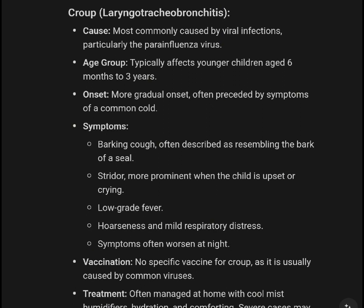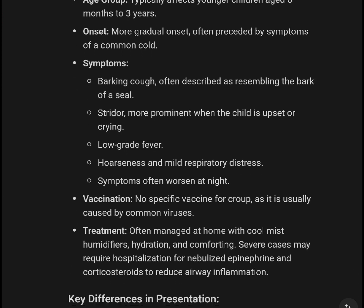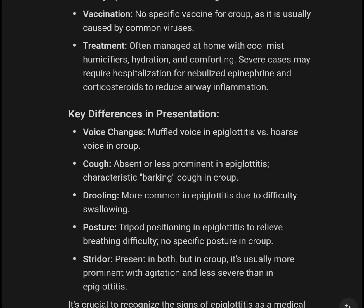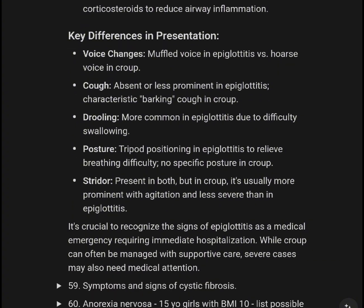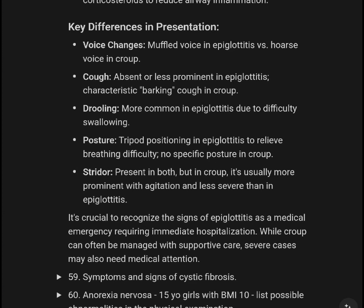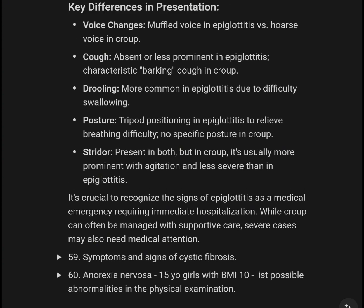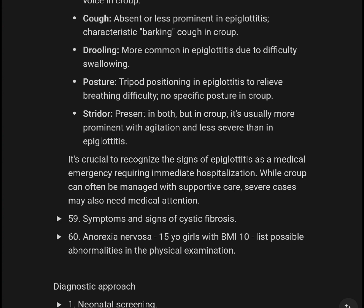Croup, or laryngotracheobronchitis, is most commonly caused by viral infection, particularly parainfluenza virus. It typically affects younger children aged 6 months to 3 years, with a more gradual onset preceded by URI symptoms. Symptoms include barking cough, stridor more prominent when the child is upset or crying, low-grade fever, hoarseness, and mild to moderate respiratory distress, often worsening at night. No specific vaccine exists; treatment is often managed at home with cool mist, humidification, and hydration. Key differences: muffled voice in epiglottitis vs. hoarse voice in Croup; cough absent in epiglottitis vs. barking cough in Croup; drooling more common in epiglottitis due to difficulty swallowing; tripod posturing in epiglottitis with no specific posture in Croup; stridor present in both but more prominent with agitation in Croup and less severe than epiglottitis. It is crucial to recognize epiglottitis as a medical emergency requiring urgent hospitalization.